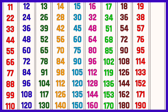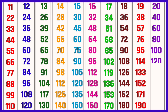Table of 20: 20 ones are 20, 20 twos are 40, 20 threes are 60, 20 fours are 80, 20 fives are 100, 20 sixes are 120, 20 sevens are 140, 20 eights are 160, 20 nines are 180, 20 tens are 200.